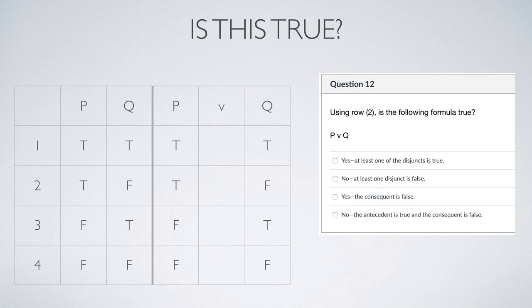We look at row two: p is true and q is false, but since at least one disjunct is true, this proposition is true. Following rule eight we enclose it in parentheses and look at our options. We've got two yes options: at least one disjunct is true at the top, and the third says the consequent is false — but q isn't a consequent here since this isn't a conditional. Also, the second option says at least one disjunct is false, which is true, but that doesn't make the complex proposition false. For disjunction, at least one disjunct just has to be true.